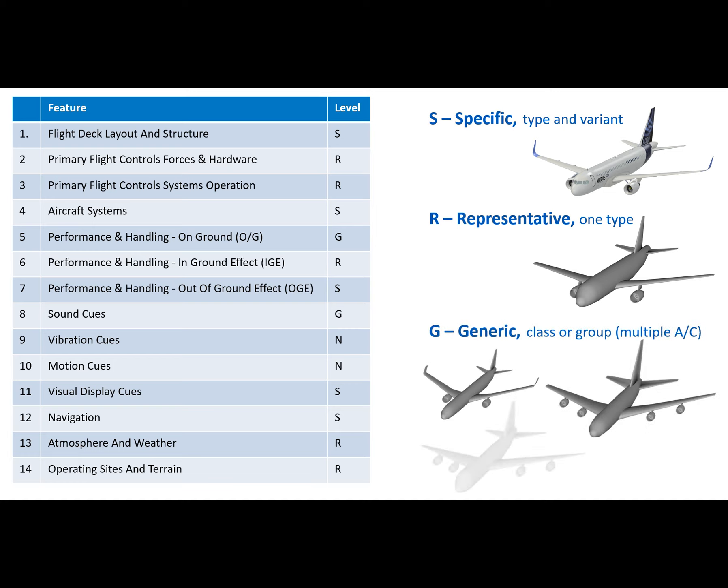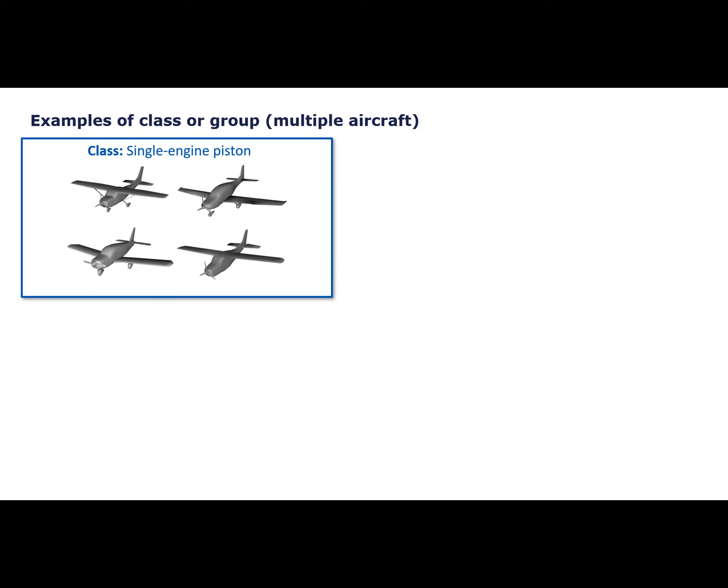Level G means a generic feature where simulation is characteristic of a class or group of aircraft — it is the only level that allows simulation being based on multiple aircraft. A class is defined by the pilot licenses, like single engine piston, multi-engine piston, and so on. Airplanes within a class are different but still have fairly similar characteristics. If an FSTD feature is simulated at a generic level, the feature may be based on characteristics of multiple aircraft of a class.